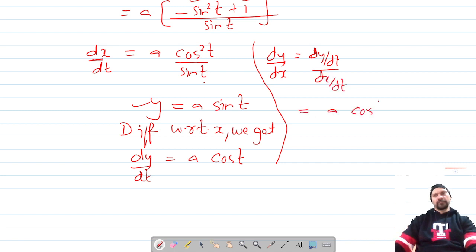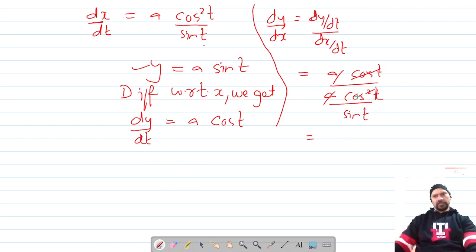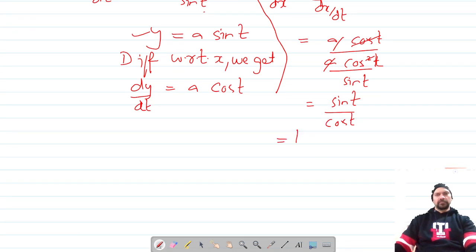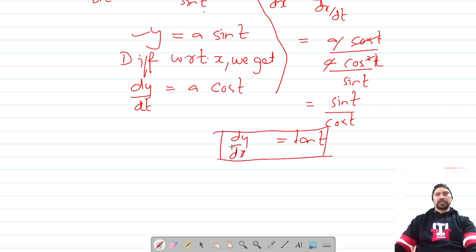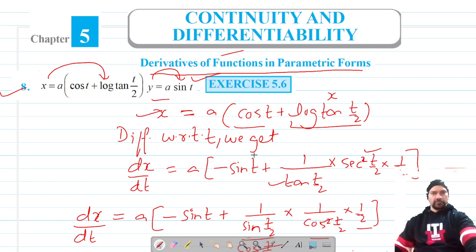Using dy/dx equals dy/dt divided by dx/dt, substituting the values gives a·cos t divided by a·cos²t/sin t. The a cancels, and simplifying gives sin t·cos t over cos²t, which equals sin t over cos t, and that equals tan t. So dy/dx equals tan t. That completes question number eight. Please like, share, and subscribe. Thank you for watching.